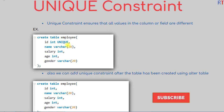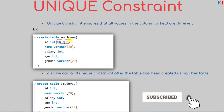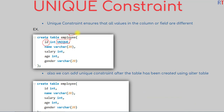So this is how we can add the unique constraint to one or more fields in a table, ensuring those fields will only accept unique values. Hope you understood the concept — see you in the next one, thank you.